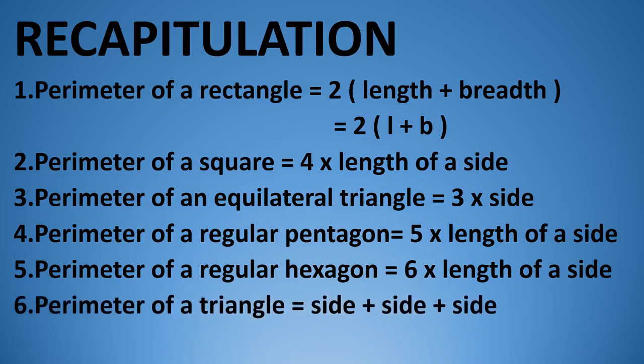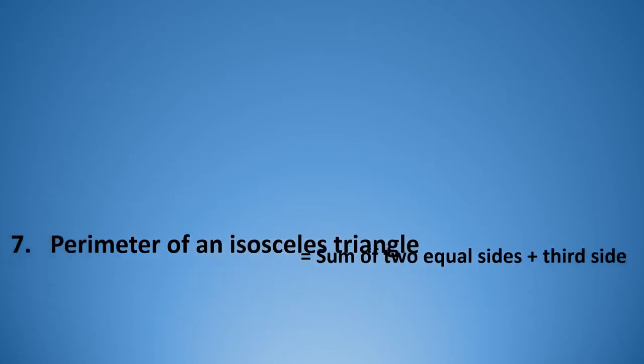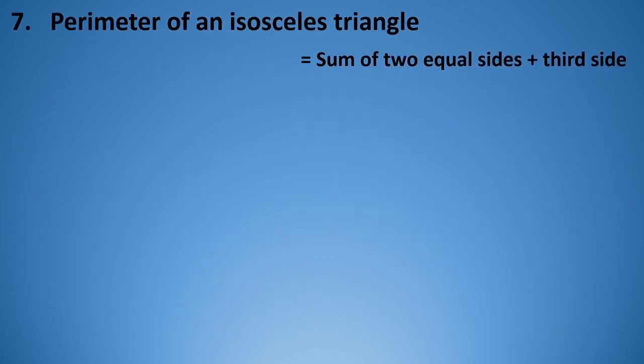Sixth, perimeter of a triangle — if it is not an equilateral triangle, then its perimeter is side plus side plus side. Seventh, perimeter of an isosceles triangle, whose two sides are equal — its perimeter is equal to the sum of two equal sides plus the third side.